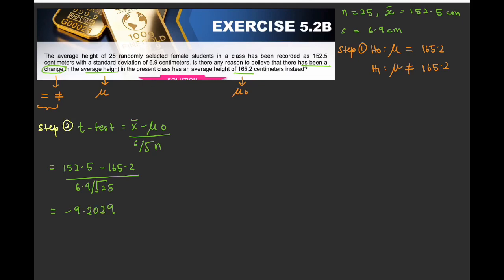Step number 3. Your critical value. 1 tail or 2 tail. So because of the symbol equals and not equals. So this one will be 2 tail. Okay. 2 tail.